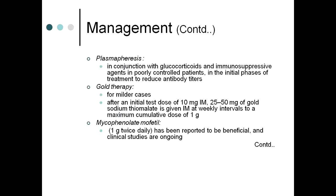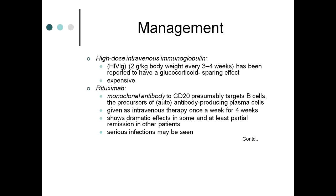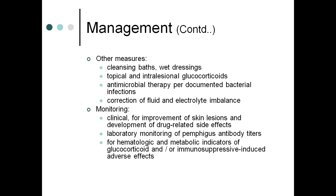Plasmapheresis in conjunction with glucocorticoids and immunosuppressive agents can be used in poorly controlled patients. Mycophenolate mofetil 1 g twice daily has been reported beneficial. High-dose intravenous immunoglobulins (2 g/kg every 3–4 weeks) are effective but expensive. Rituximab (anti-CD20 monoclonal antibody targeting B cells) given IV once weekly for four weeks shows dramatic effects in some and partial remission in others, though serious infections may occur.